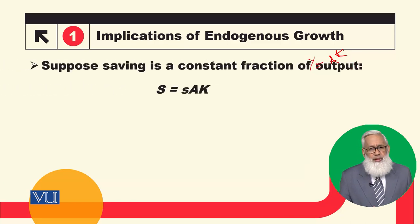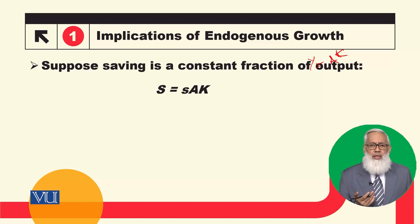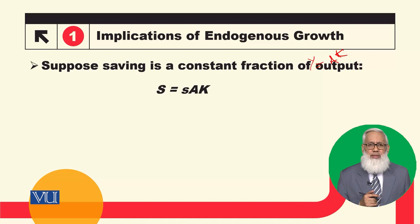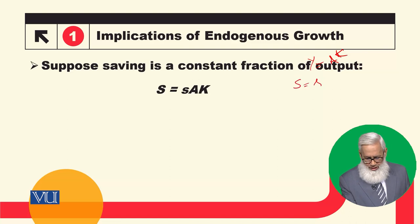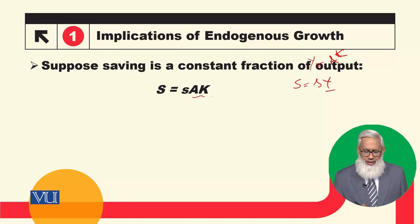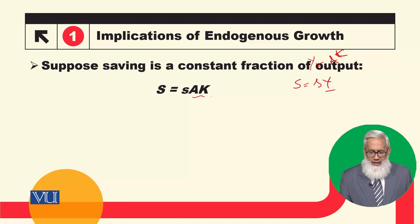Just as in the Solow model, we assume that total saving is determined by the saving rate. Small s is the saving rate, capital S is the total saving, and the saving rate is constant. Saving is small s times y, and from this Endogenous Growth Model y equals ak, so capital S is equal to small s times ak.